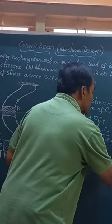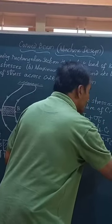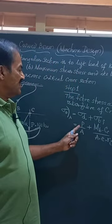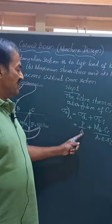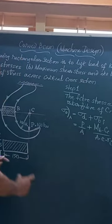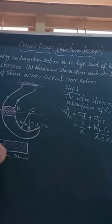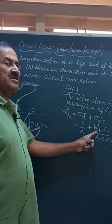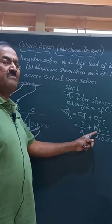You can find this in the machine design data handbook. P is given to us. The area of the cross section is given as a rectangle. The area of this will be 150 into 75. MB is the...